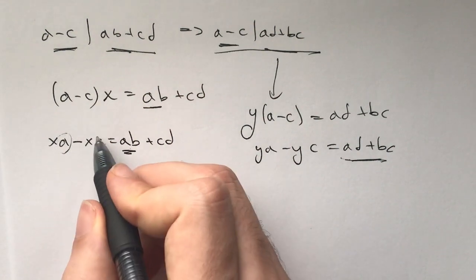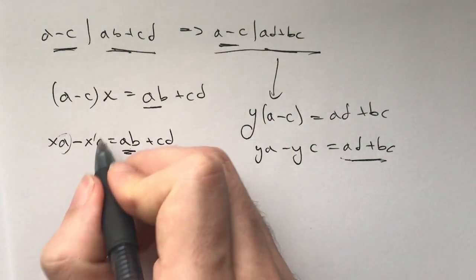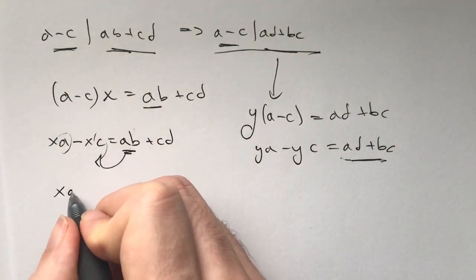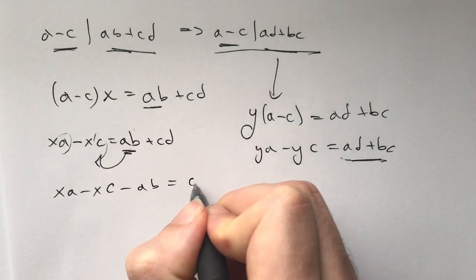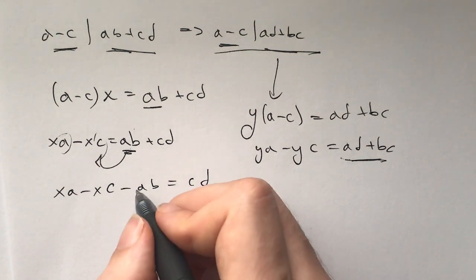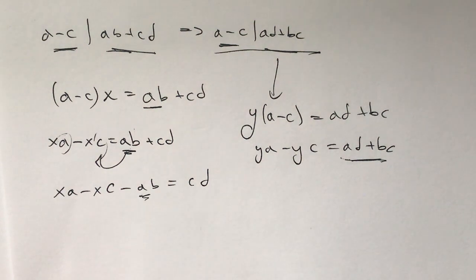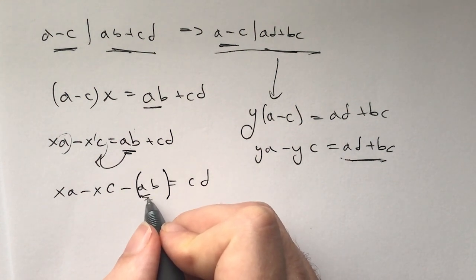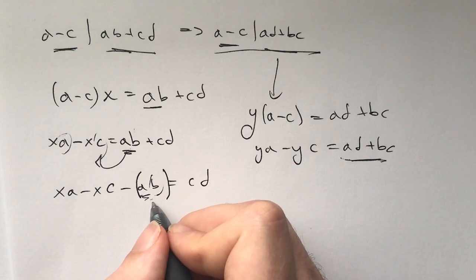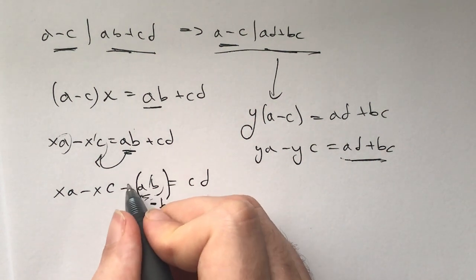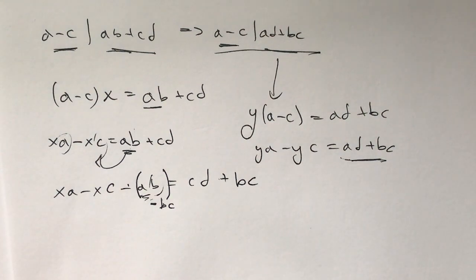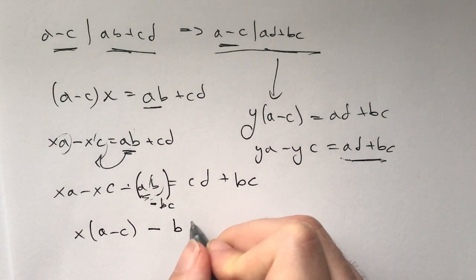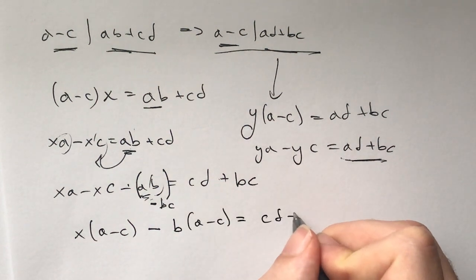To maybe have (a-c) on this side, then we can move it here. Actually, let's move ab here, then we have xa minus xc minus ab equals cd. Now how do I create (a-c)? Well it's going to be minus ab and I need to get b out, so I need to add plus bc here. So I'll get x times (a-c) minus b times (a-c) equals cd plus bc.